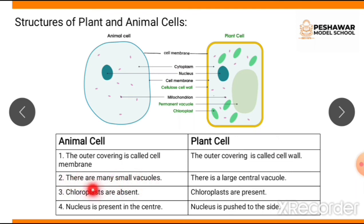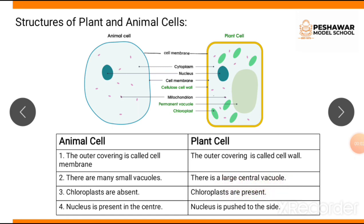The second difference: animal cells have many small vacuoles, while in plant cells there is one large central vacuole — you can see it in the diagram. Third: chloroplasts are absent in animal cells. Chloroplasts are a green-colored pigment present only in plants, which help in the synthesis of food. You can see these green-colored structures in the plant cell diagram. Fourth: in animal cells the nucleus is present in the center, while in plant cells the nucleus is pushed to the side.